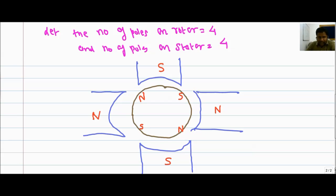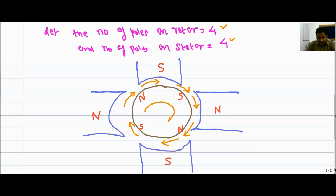By closely examining this configuration, we can say that the north of the rotor is repelled by the stator north and attracted by the stator south. Similarly, each south of the rotor is attracted by the stator appropriately. So we have seen that when the number of poles in the rotor and the stator is the same, an electromagnetic torque is uniformly generated. We can conclude that in any electrical machine, the number of poles in the rotor and the stator must be the same.